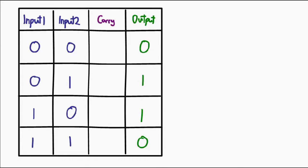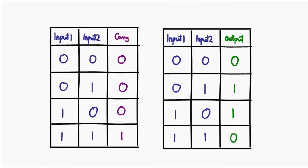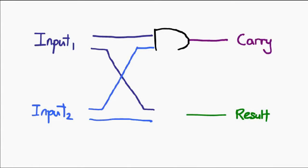For the carry bit: zero plus zero gives no overflow, so carry is zero. Same for zero-one and one-zero — no overflow, carry remains zero. The only time we overflow is when adding one and one, so carry is one. Looking closely at these two truth tables, they are familiar: the carry truth table matches the AND gate, and the output truth table matches the XOR gate. To create a half adder, we take the two input bits and route them into both gates simultaneously.